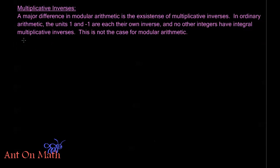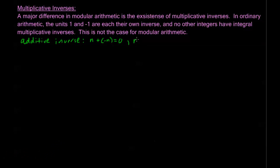Just in case you don't know what this means: if I talk about an additive inverse, every integer has an additive inverse. If I have an integer n and I add that to negative n, I get zero. So negative n is called the additive inverse of n, and zero is called the additive identity. For multiplication, the multiplicative identity is 1. We say that n has an inverse — we write n times n-inverse equals 1. So a number has an inverse if I can multiply that number by its inverse and get 1.